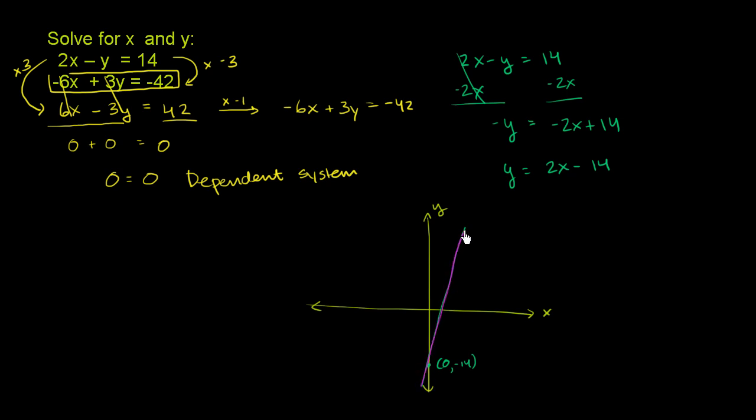So there's actually an infinite number of solutions. These two lines are the same line. So they intersect everywhere on each of the respective lines. They're the same line. And when you get something like this, 0 equals 0 or 1 equals 1, that's the telltale sign that you're dealing with a dependent system.